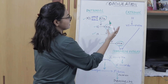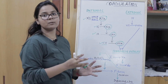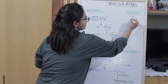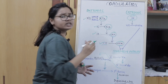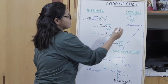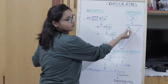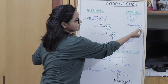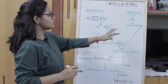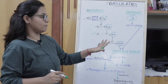In the extrinsic pathway, the important factor involved is factor 3, that is tissue thromboplastin. What factor 3 does is convert factor 7 to active factor 7A. This is the conversion that takes place in the extrinsic pathway.